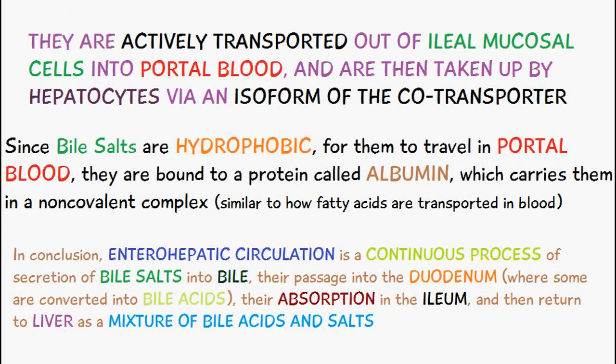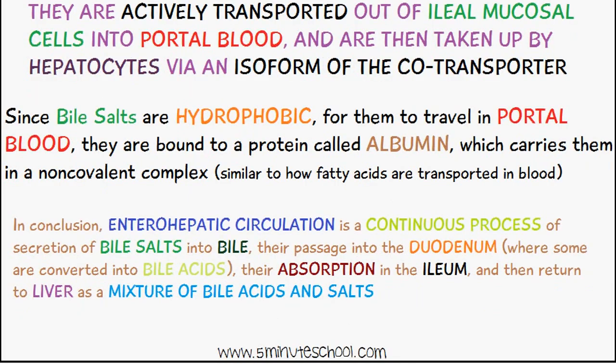In conclusion, enterohepatic circulation of bile salts is a continuous process of the secretion of bile salts into bile and their passage into the duodenum, where some are converted into bile acids, followed by their absorption in the ileum and then their return to the liver as a mixture of bile acids and salts.